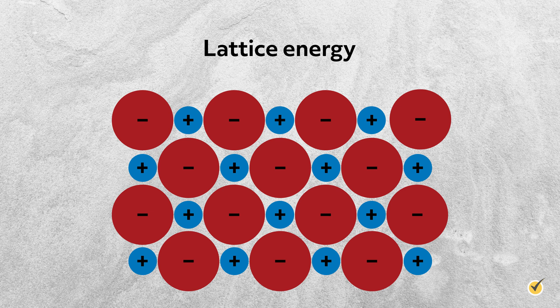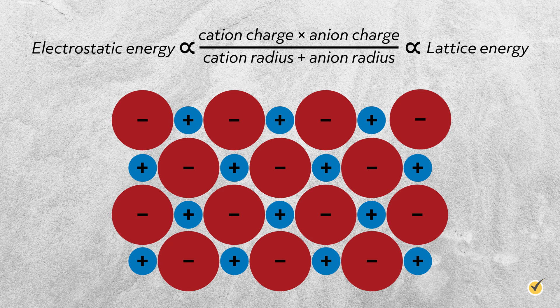The lattice energy increases with increasing charge and smaller ions. In other words, the lattice energy is directly proportional to the electrostatic energy as described by Coulomb's law. Electrostatic energy is directly proportional to cation charge times anion charge over cation radius plus anion radius, which is directly proportional to lattice energy. So when we talk about ionic bonds, we're almost always going to be talking about the associated ionic solid, because we very rarely ever form a single ionic bond. This is also why chemists don't refer to compounds formed through ionic bonds as molecules, because they don't exist as single discrete units.